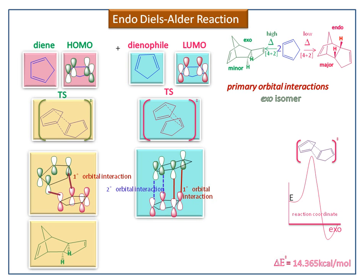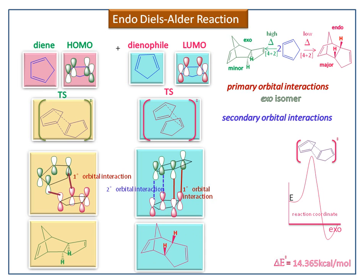Secondary orbital interaction does not give rise to new bonds, but stabilizes the transition state and lowers the activation energy. The activation energy of the endo isomer is 10.26 kilocalories per mole.